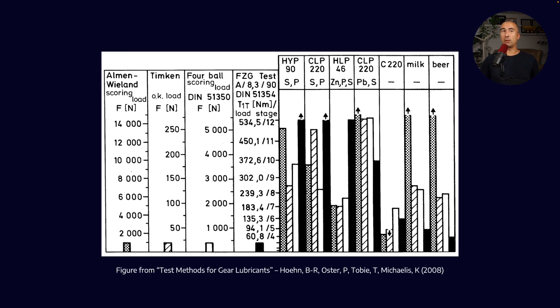What they're trying to demonstrate is which one actually correlates to real world performance. And what they did here is something really interesting. They took a variety of gear oils and a hydraulic oil, and they tested them against milk and beer. So household items, which we know for a fact, do not lubricate all that well in the real world.